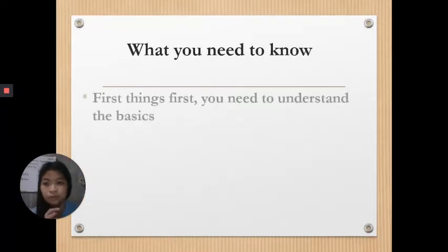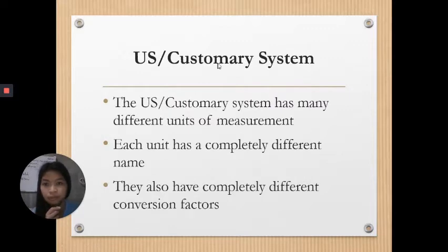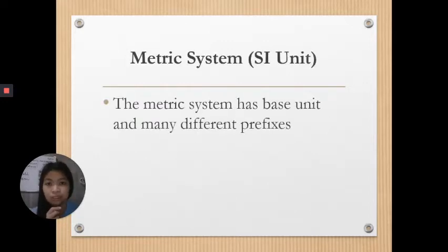What you need to know? First things first, you need to understand the basics. There are two systems of measurement: the U.S. or customary system, and the metric system, which is used all over the world, also known as SI unit or the standard international unit. The U.S. customary system has many different units of measurement and completely different conversion factors. In the metric system or SI unit, the metric system has a base unit and many different prefixes.